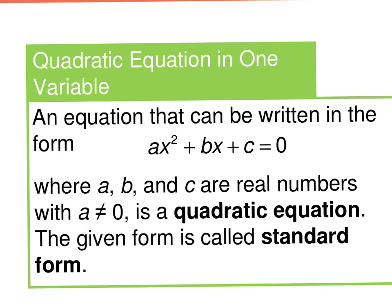Just remember here that a quadratic equation in one variable is in this form, ax squared plus bx plus c. a, b, and c are real numbers. a can't be zero. And this is called standard form.